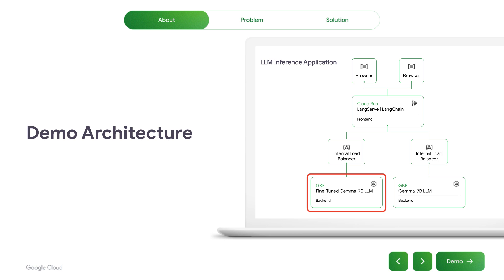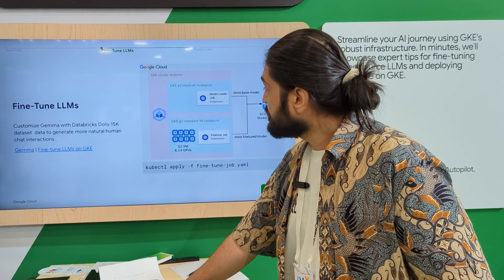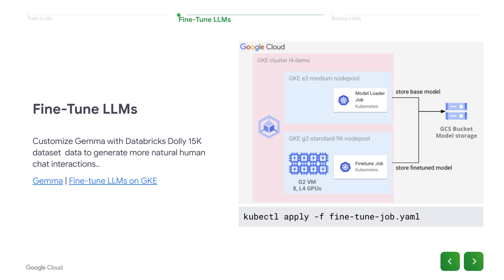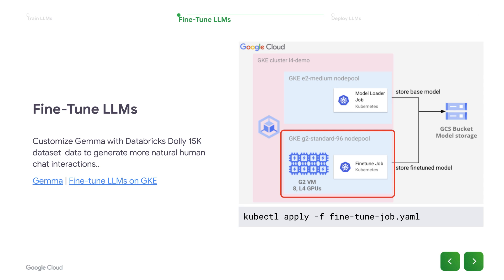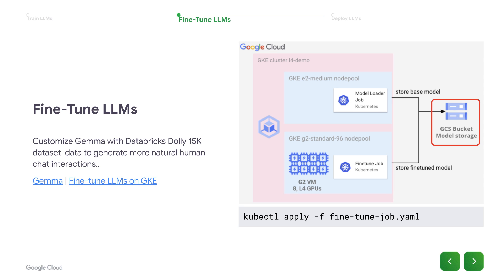The fine-tuned Gemma 7 billion model was the same 7 billion model, but fine-tuned using the Dolly dataset from Databricks, which is a 15K line dataset. At a very high level, the way to fine-tune the LLM would be: take the base model from a GCS bucket, pull it down into the virtual machine that has GPUs to do the actual fine-tuning. Once the fine-tuning job is completed, the finished checkpoints go back into GCS for later retrieval by the deployments.